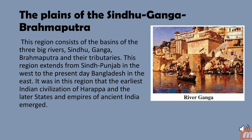The plains of the Sindhu, Ganga, and Brahmaputra consist of the basins of these three big rivers and their tributaries. This region extends from Sindh and Punjab in the west to present-day Bangladesh in the east. It was in this region that the earliest Indian civilization of Harappa and the later states and empires of ancient India emerged. Also known as the Great Plains, these large floodplains run parallel to the Himalayas from Jammu and Kashmir in the west to Assam in the east, draining most of northern and eastern India.